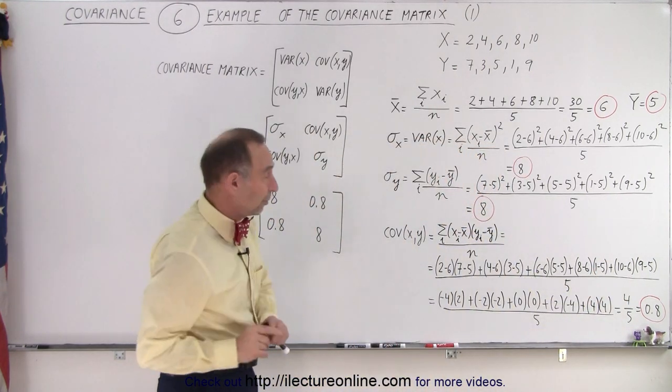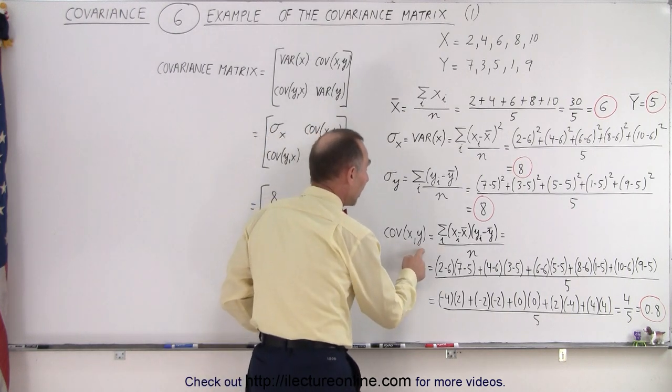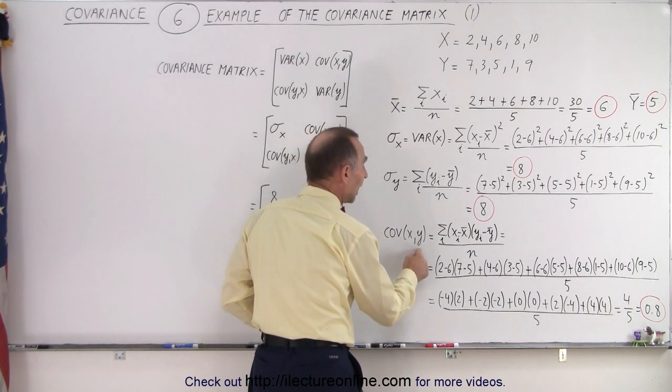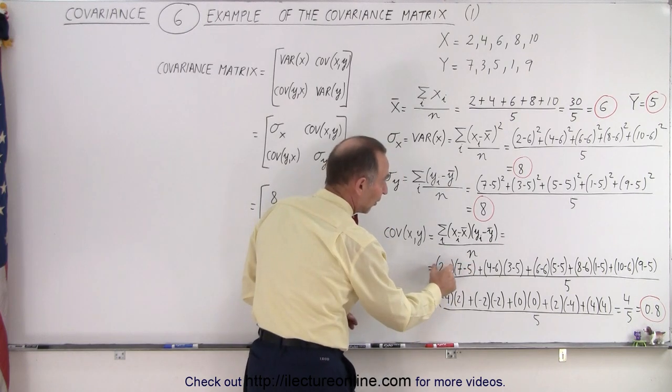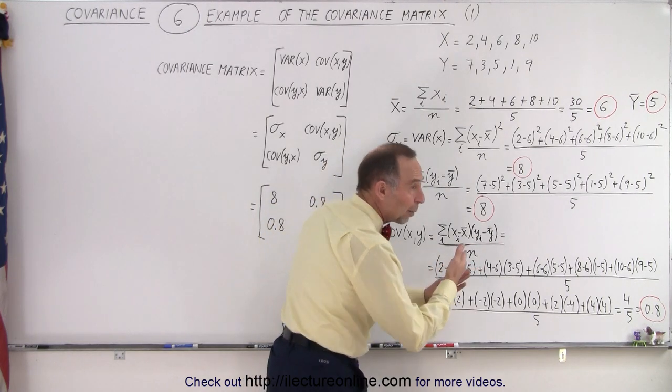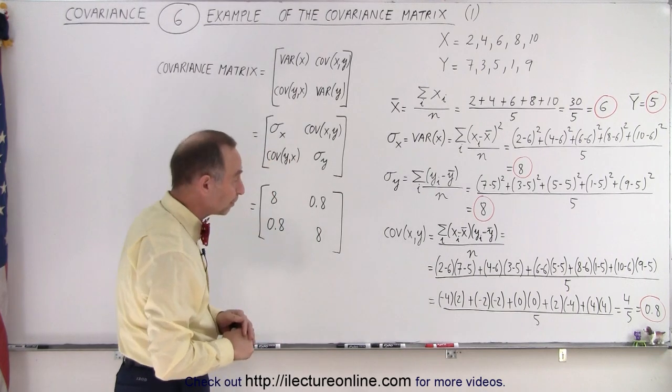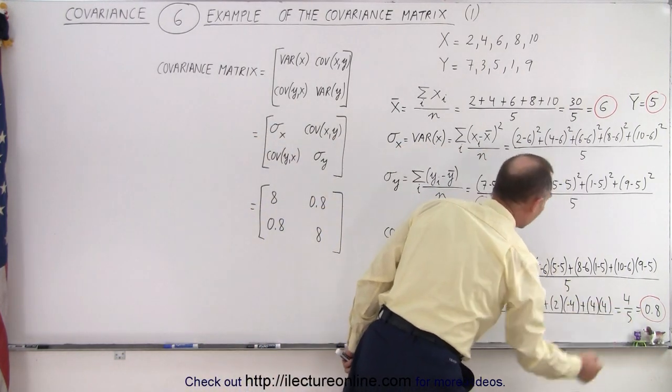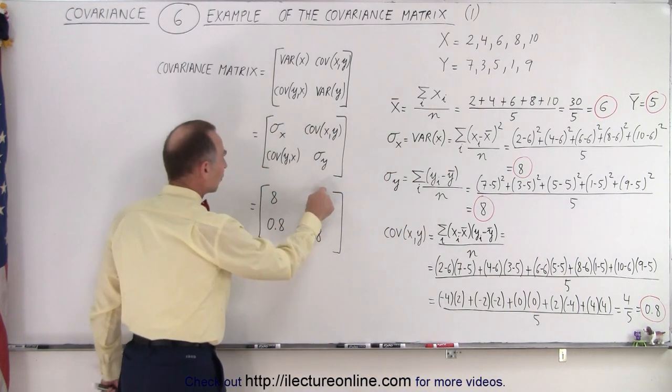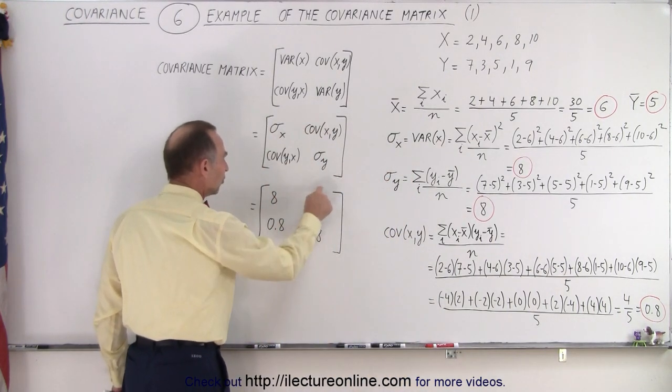Notice we only have to do it once because the covariance of X and Y is the same as the covariance of Y and X. They're the same because we simply have to put this in front and put this in the back. Notice that when we multiply, we get the very same result, and so that means that in this case, the covariance is 0.8, and that is the number that goes in the off-diagonal positions in the matrix.